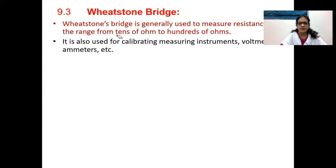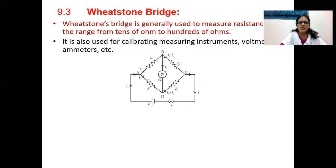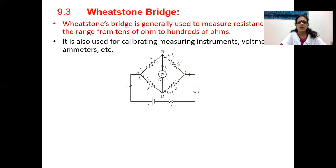Let us see what this circuit looks like. In the diagram there are four resistors connected in a closed network. Between points A and B resistor P is connected, B to C there is Q, C to D there is R, and from A to D there is S. So there are four resistors P, Q, R, and S connected to form a closed network.